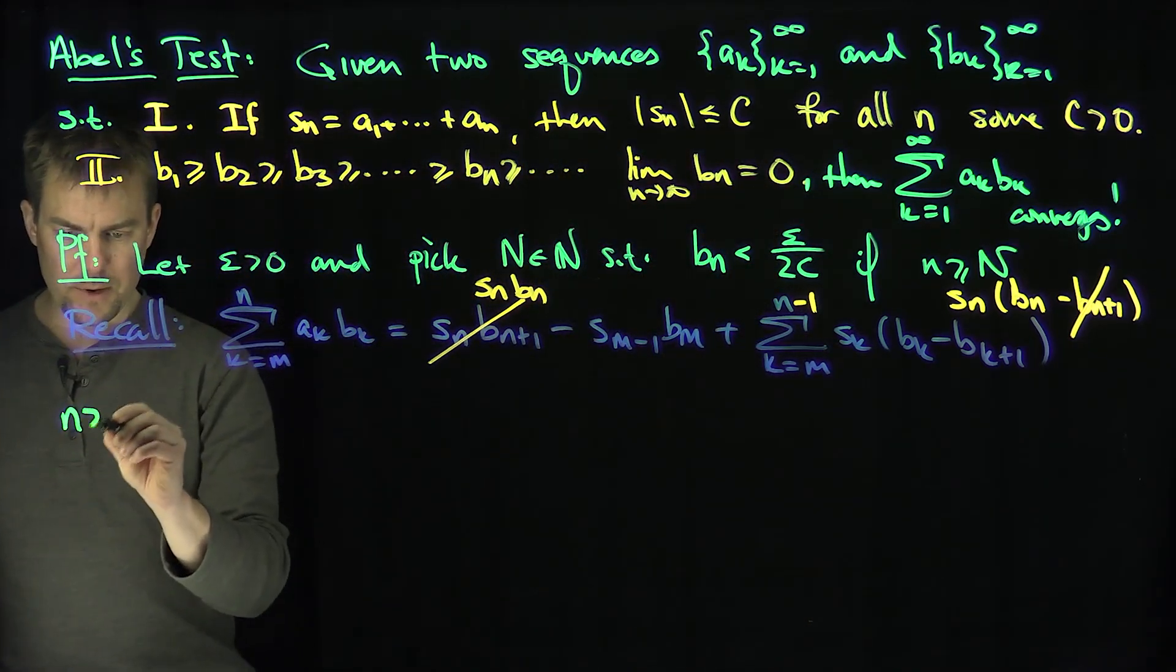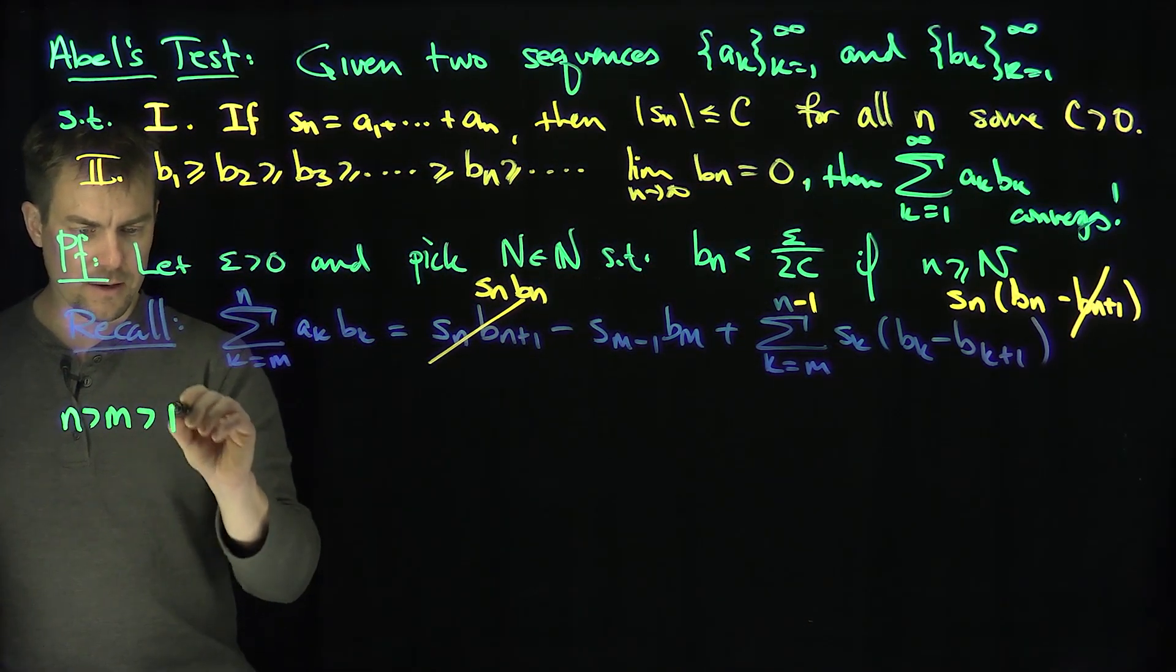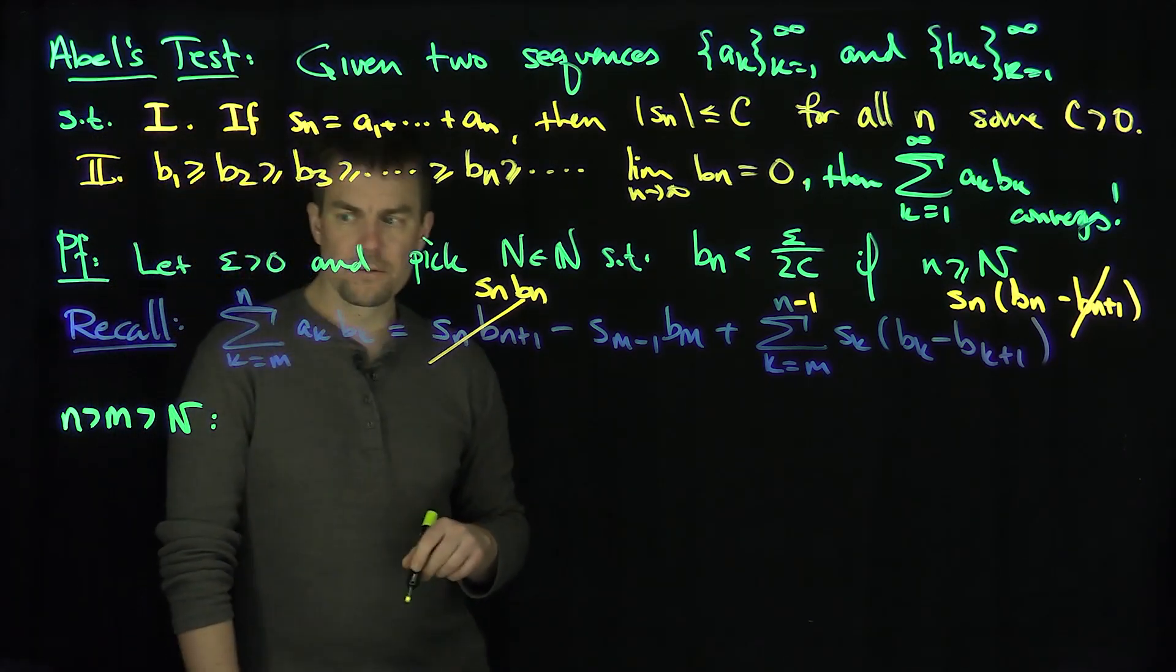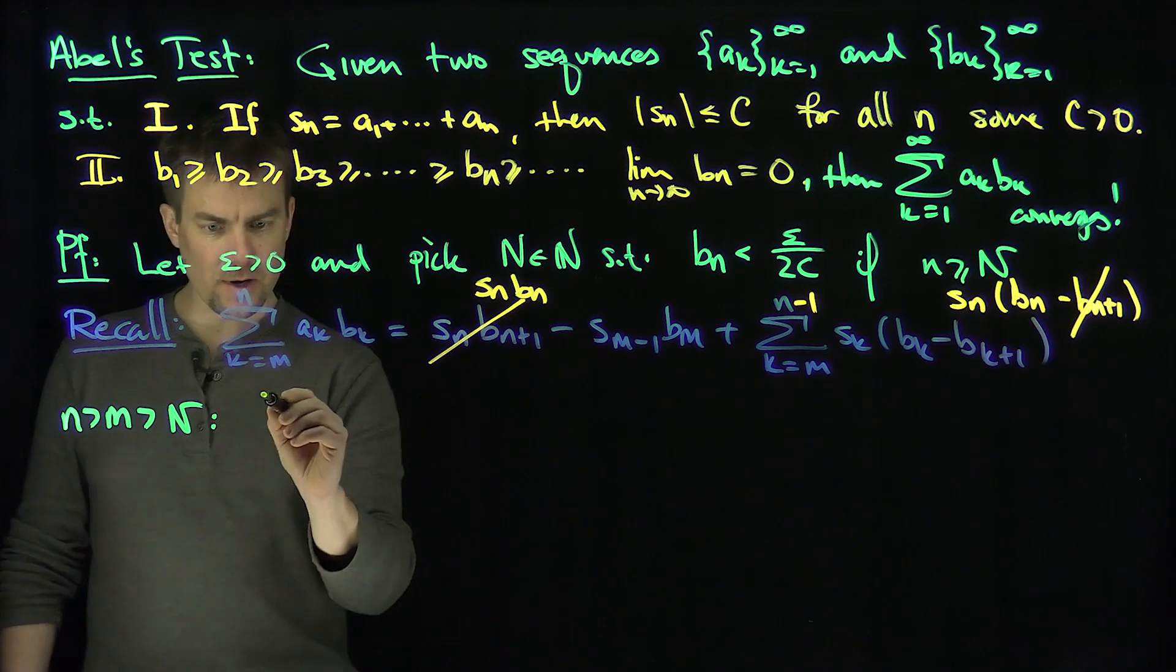Now let me assume, let's let n be bigger than m, be bigger than N. So that's my range for m and n. For this range, what will we estimate? Let's estimate our sum.